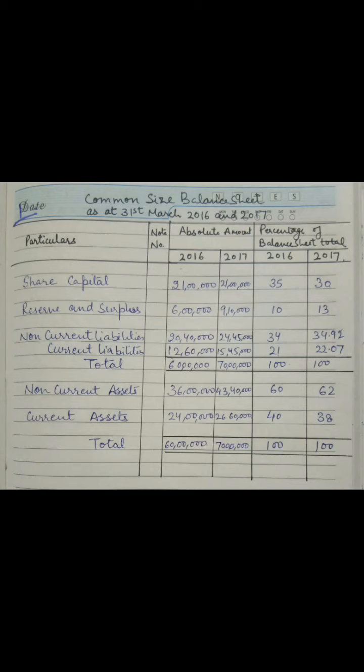For the total, dividing 60 lakhs by 60 lakhs into 100 comes to 100 percent. Similarly for 2017, 70 lakhs upon 70 lakhs into 100 again comes to 100 percent.